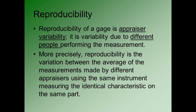The next kind of variability is reproducibility. Reproducibility has to do with variation in how a gauge performs when different appraisers — different people — use the gauge. It's appraiser variability, due to different people performing the measurement. More precisely, it's the variation between the average measurements made by different appraisers using the same instrument, measuring the identical characteristic on the same part.